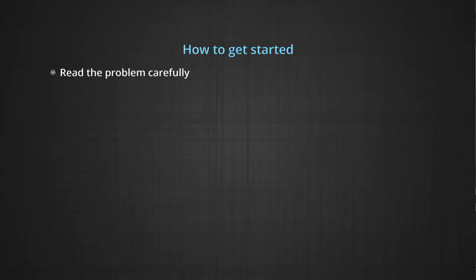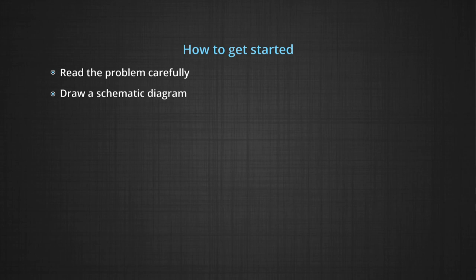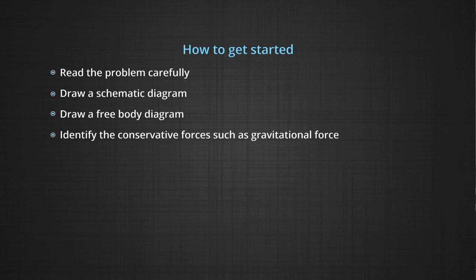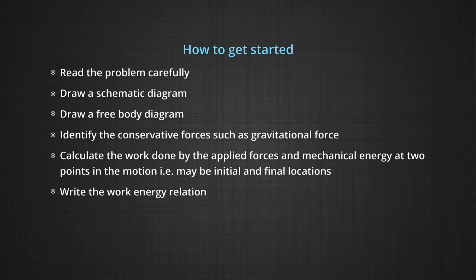How to get started: Read the problem carefully. Draw a schematic diagram. Draw a free body diagram if necessary. Identify the conservative forces, such as gravitational force. Calculate the work done by the applied forces and mechanical energies at two points in motion — this may be initial and final locations. Write the work energy relation and solve the problem.